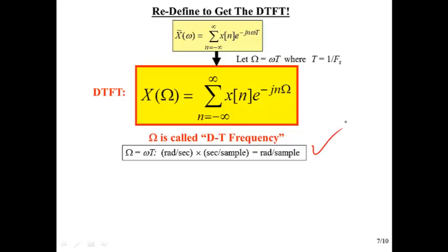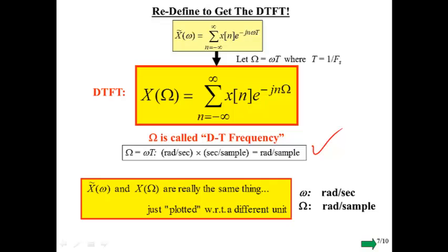And so, the seconds cancel and we're left with radians per sample. So, it's consistent with what we've seen before. So, x tilde of omega and x of capital omega, despite their differing notational concepts, are really just the same thing, just plotted with respect to a different unit. It's like plotting one thing versus meters and the same thing versus feet. So, we've got two different frequencies. And this really tells us the connection between continuous time frequency domain ideas and discrete time frequency ideas.